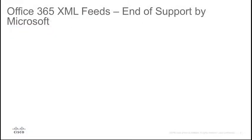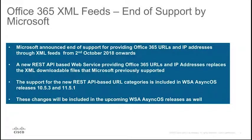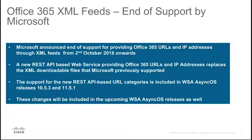What are some of the changes in the way Microsoft publishes URLs and IP addresses of the Office 365 servers? Microsoft recently announced end of support for providing Office 365 URLs and IP addresses through XML feeds from October 2, 2018 onwards. Microsoft has started supporting a new REST API-based web service for providing Office 365 URLs and IP addresses, and these feeds replace the feeds in XML format it previously supported. Support for Office 365 external feed categories through REST-based web service is included in WSA AsyncOS releases 10.5.3 and 11.5.1, and these changes will be part of upcoming AsyncOS releases as well.